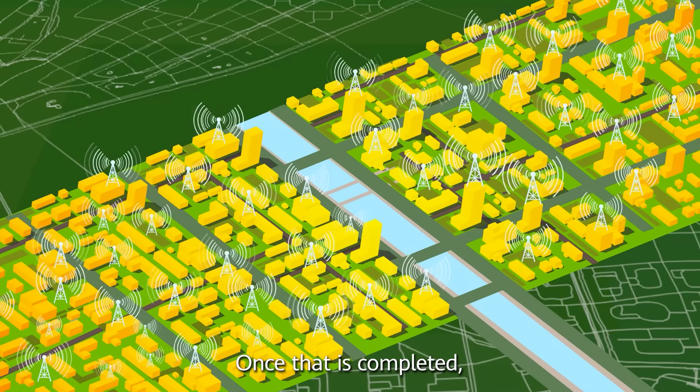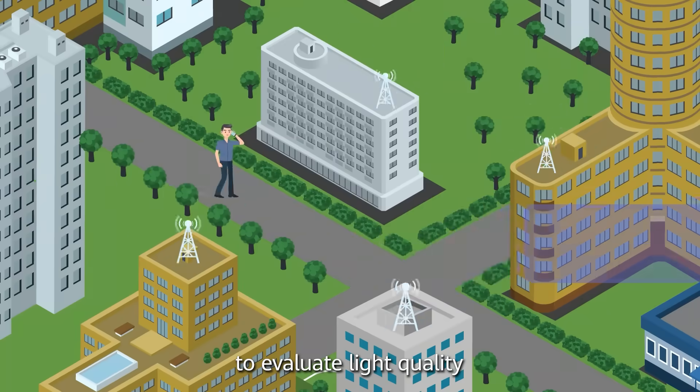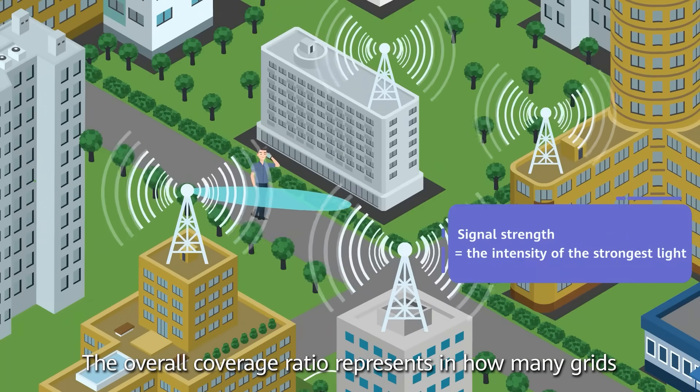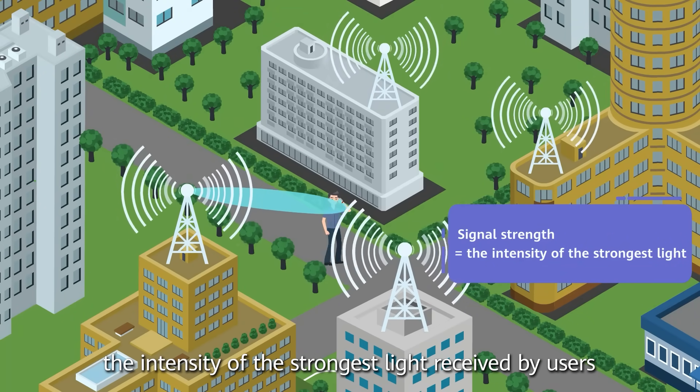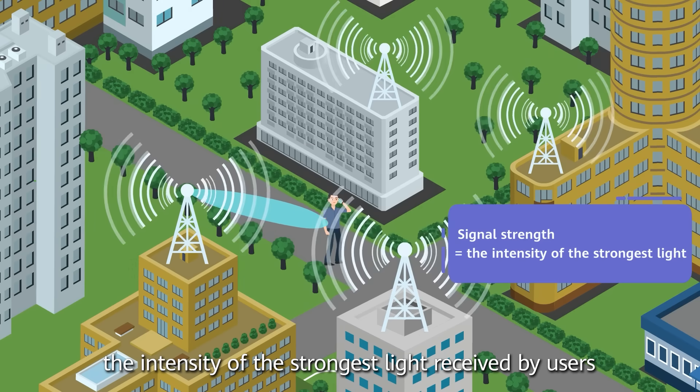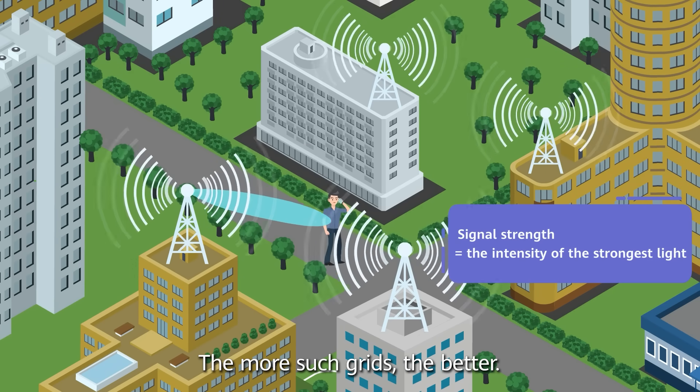Once that is completed, we use the following three indicators to evaluate light quality. The overall coverage ratio represents in how many grids the intensity of the strongest light received by users exceeds a certain threshold. The more such grids, the better.